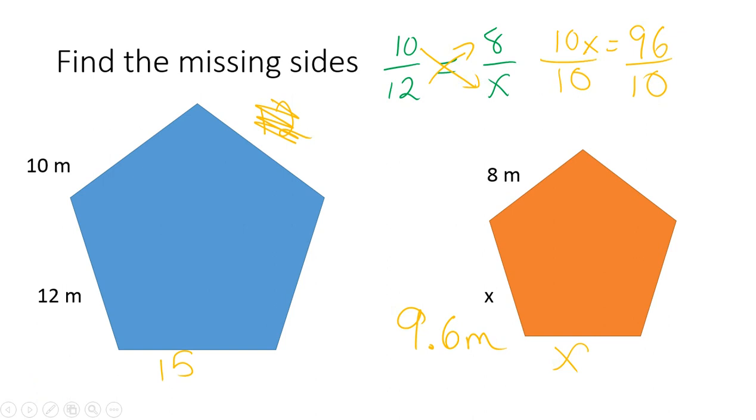We could set it up with 10 over 15 is equal to 8 over X. You could also go 12 over 15 is equal to 9.6 over X. Either one would work. And again, you would cross-multiply and you'd solve.